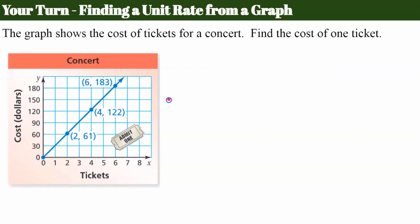Welcome back. Let's look at this graph. I'm going to just interpret these points. Again, the X coordinate represents the number of tickets. The Y coordinate represents the cost in dollars. So this ordered pair right here tells me that it's $61 for two tickets, $122 for four tickets, and $183 for six tickets.